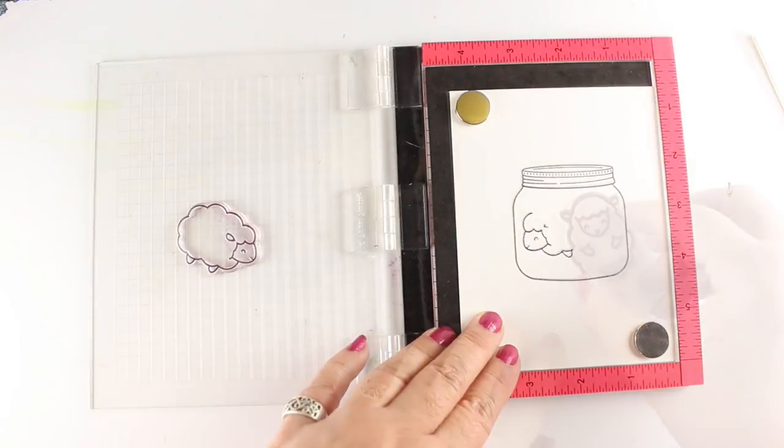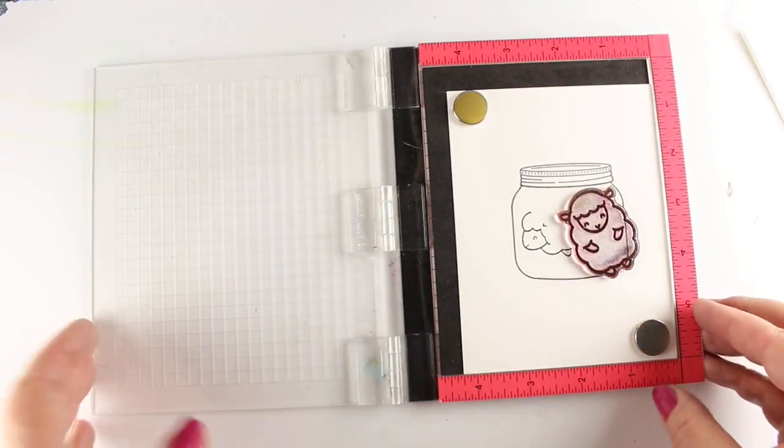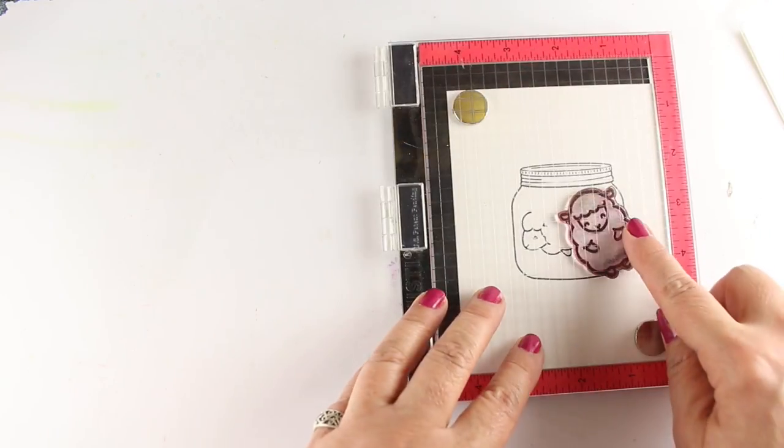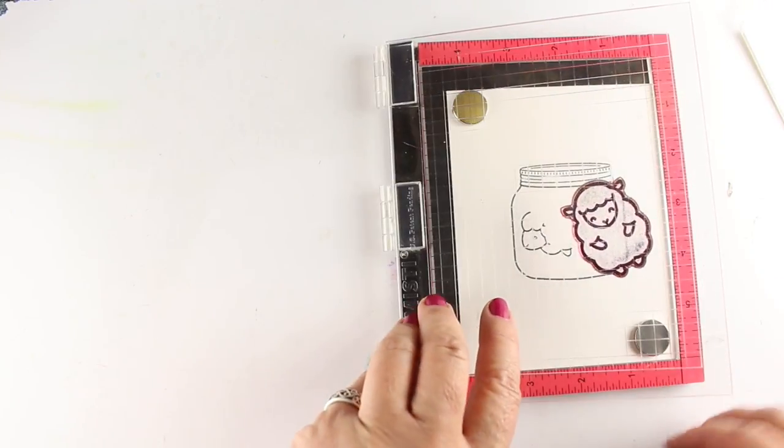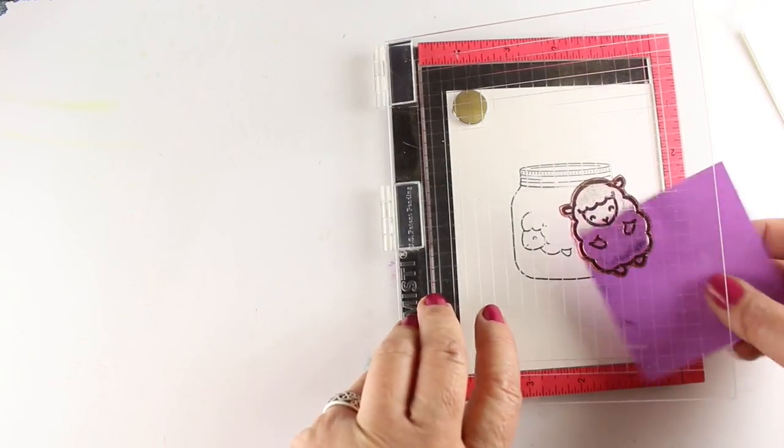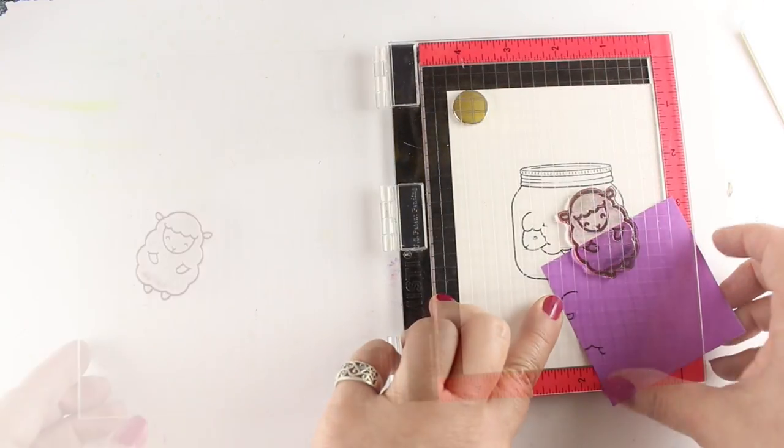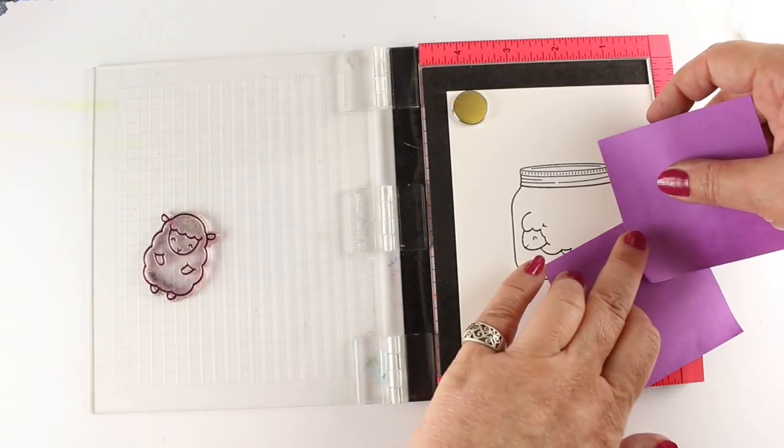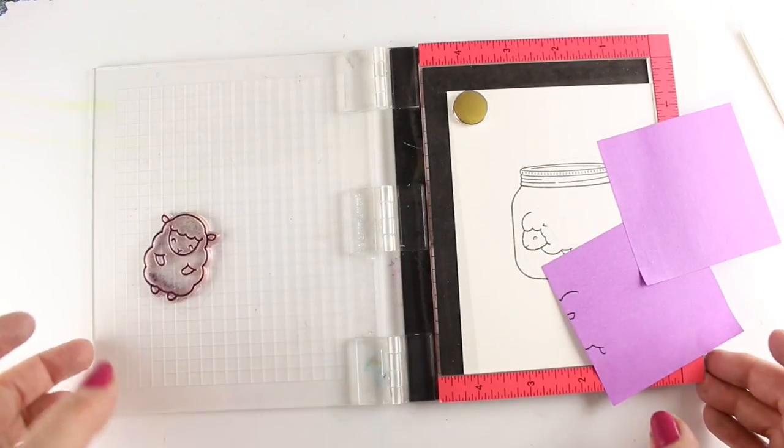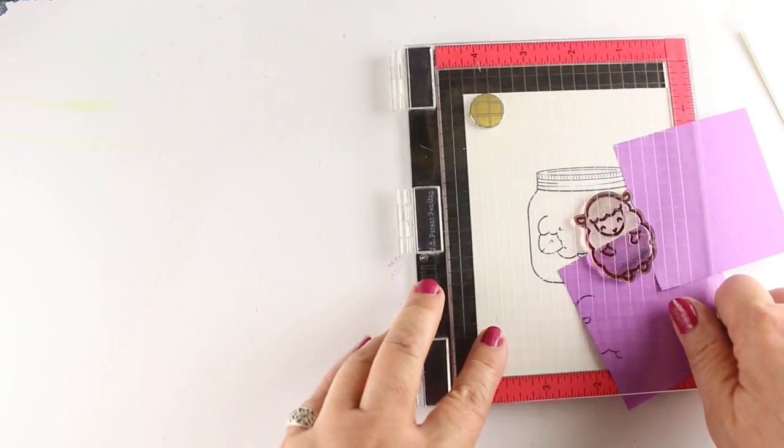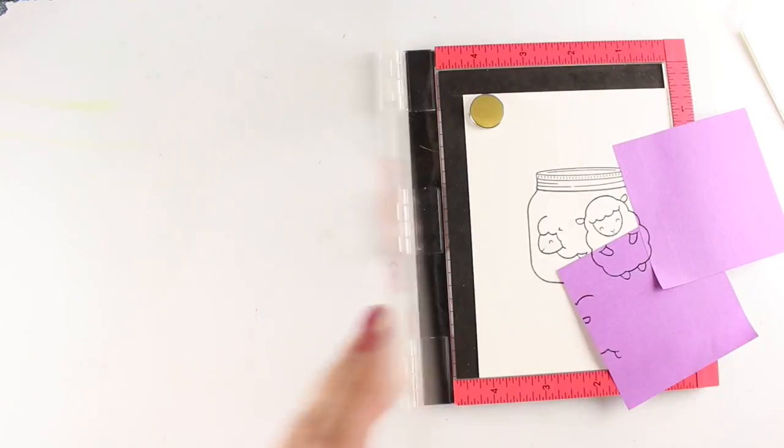And I just used a quick post-it note mask to just get the little face. And then I'll do another one of the little sheepies and I'm going to do him kind of at an angle and just tuck it underneath using the Misti to figure out generally where my placement should be. And I'll block off that outside edge so the black doesn't end up going outside my jar.